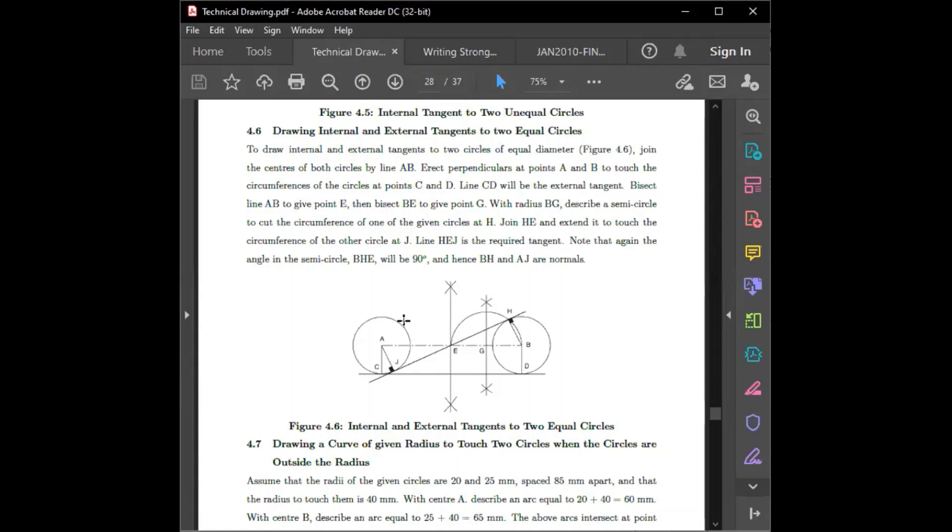Now, when we come to the case where we are drawing internal and external tangents to two equal circles, because there's no difference between the two circles, there is nothing to subtract or add. There is no parallel line we are drawing to any other line.